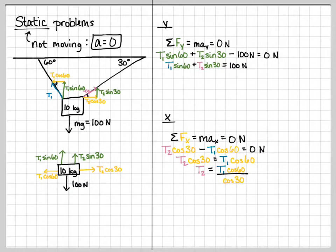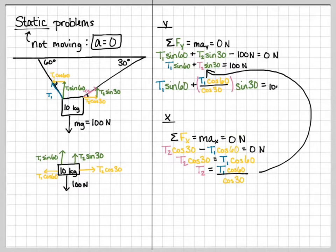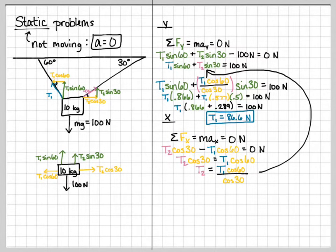With this, I can plug it into my y equation. And this is where things get ugly, but bear with me. T1 sine 60 plus T1 cosine 60 over cosine 30. That was our answer from the other one. Times sine 30. Don't forget the sine 30. That's equal to 100 newtons. Start plugging stuff into the calculator. T1 times 0.866 plus T1 times 0.577 times 0.5. I can factor out a T1. And so, dividing 100 newtons divided by 0.866 plus 0.289, I will get 86.6 newtons. So, the tension in my left string is 86.6 newtons.